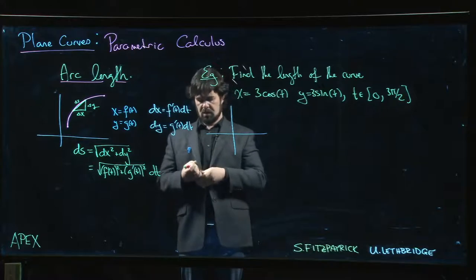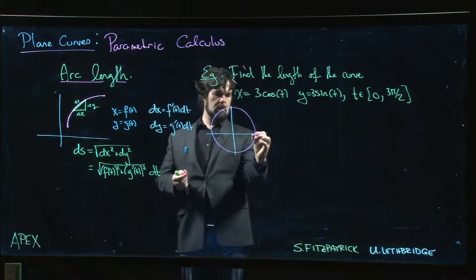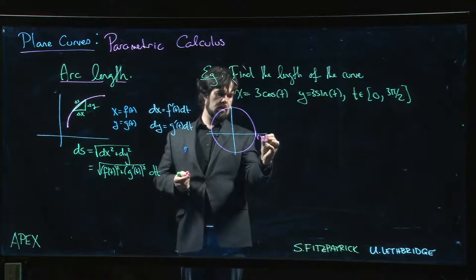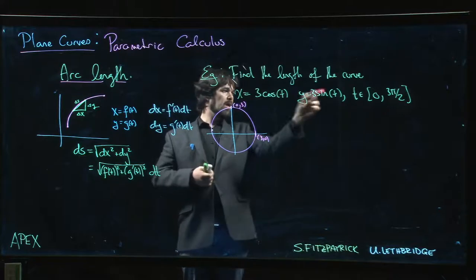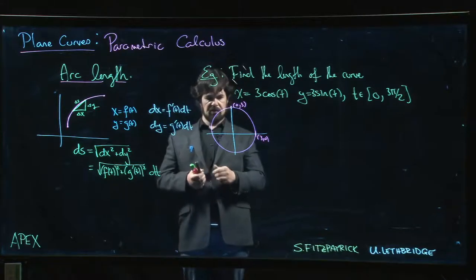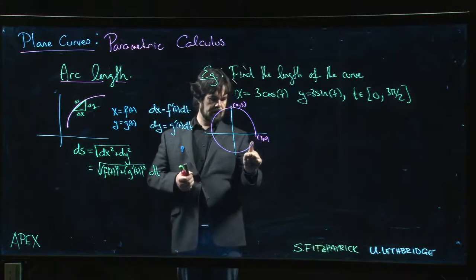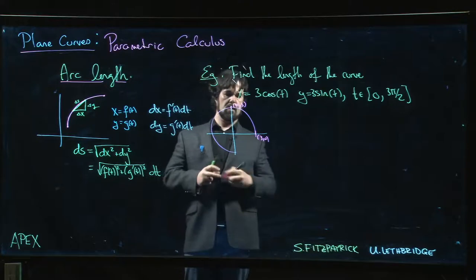It's a circle of radius 3. But t only goes from 0 to 3π/2, so actually we're not including that part of the circle. So we have 3 quarters of a circle.